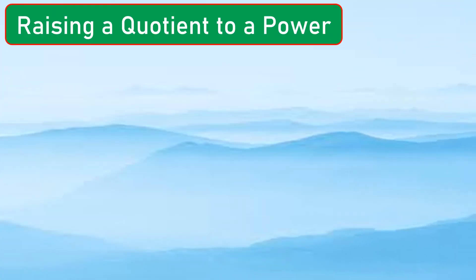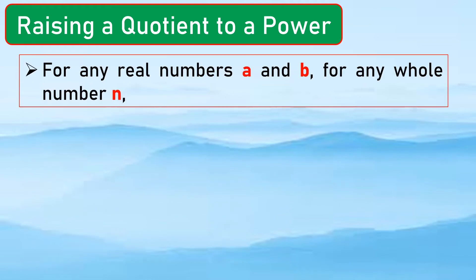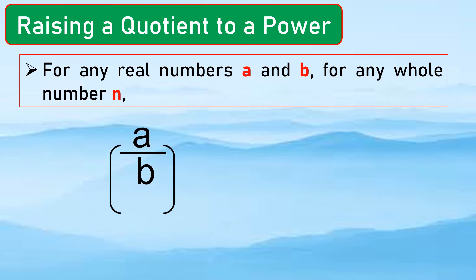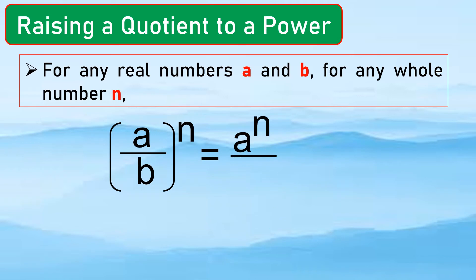Now let us have another law: raising a quotient to a power. For any real numbers a and b, and any whole number n, (a over b) raised to n equals a to the n over b to the n. We distribute n inside the parentheses, where b is not equal to 0, because that would be undefined.